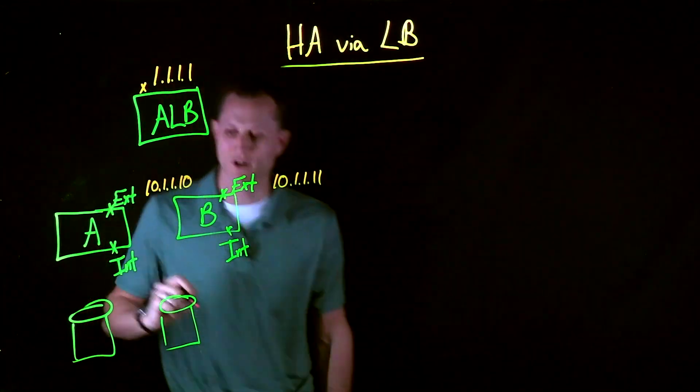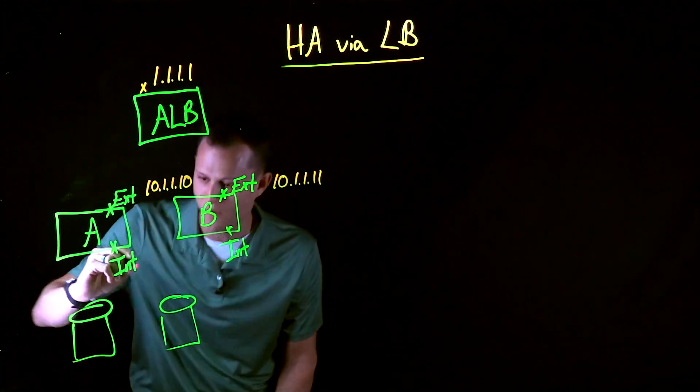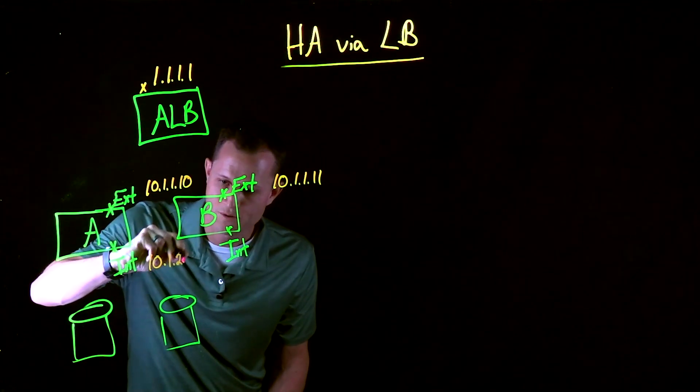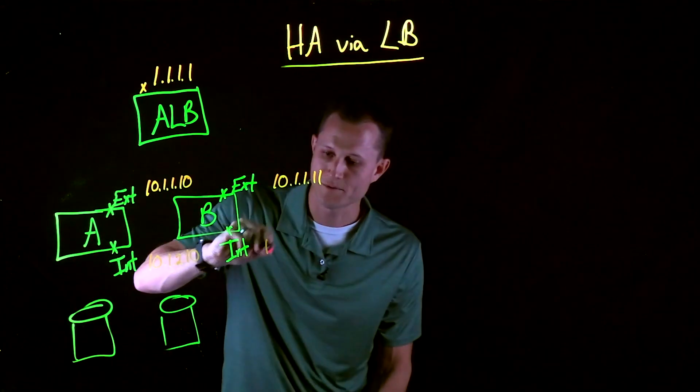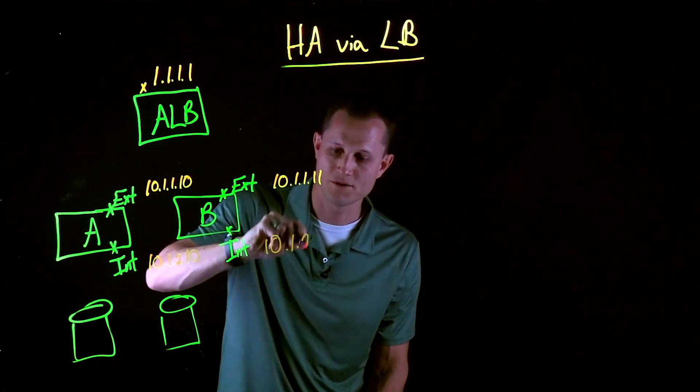And for the back-end network, we'll take a 10.1.2. So we'll do 10.1.2.10. And this one is 10.1.2.11.